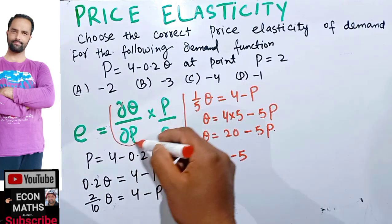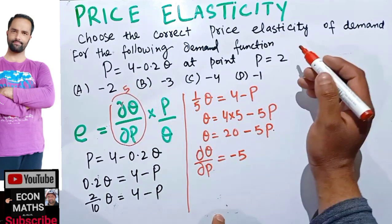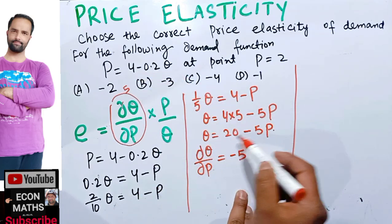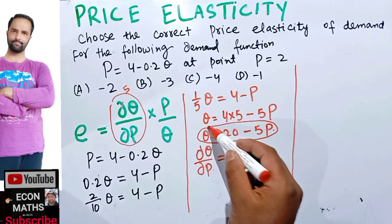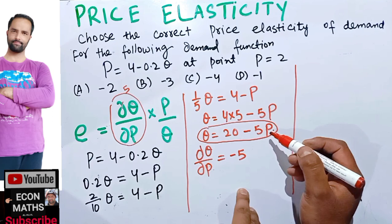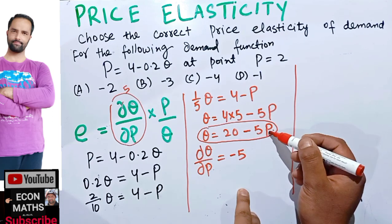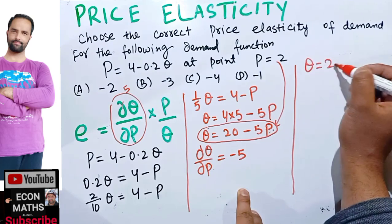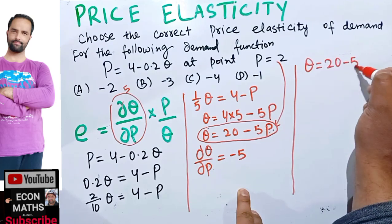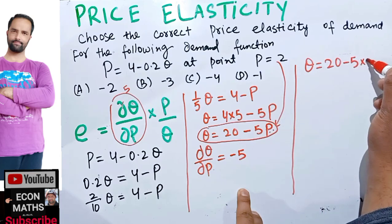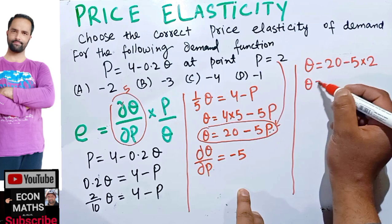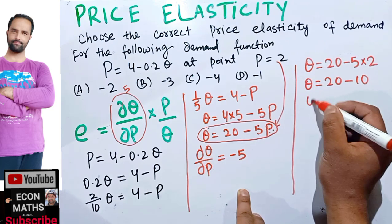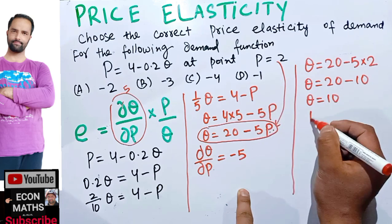So dq upon dp equals minus 5. Now we have q equals 20 minus 5p. We need to plug in the value p equals 2 to get the quantity. So q equals 20 minus 5 times 2, which gives 20 minus 10, so q equals 10. The price is given as 2.